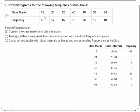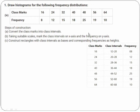Divide that difference of 8 into two equal parts — you get 4 and 4. For class mark 16, subtract 4 to get the lower limit 12, and add 4 to get the upper limit 20, giving the interval 12 to 20. For class mark 24, subtract 4 to get 20 and add 4 to get 28, giving 20 to 28. Doing the same for all class marks gives you the complete class interval table. Verify this by yourself.